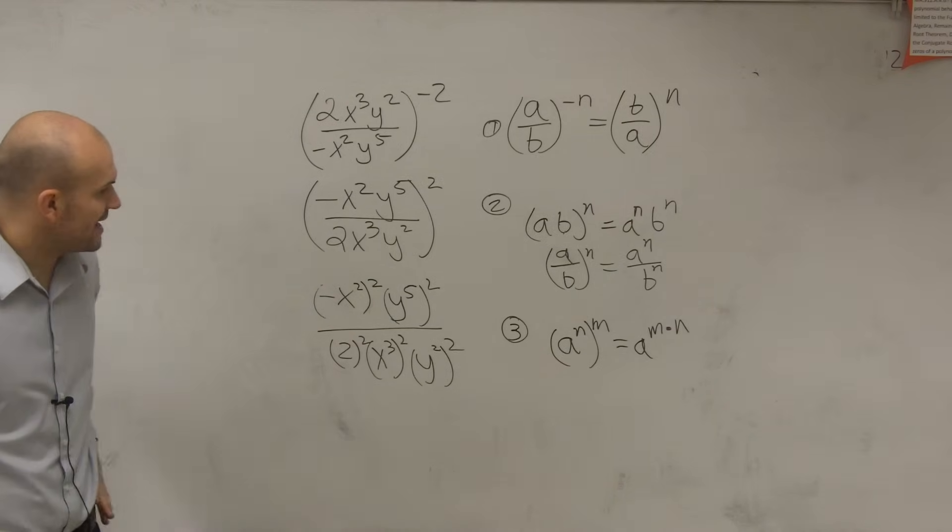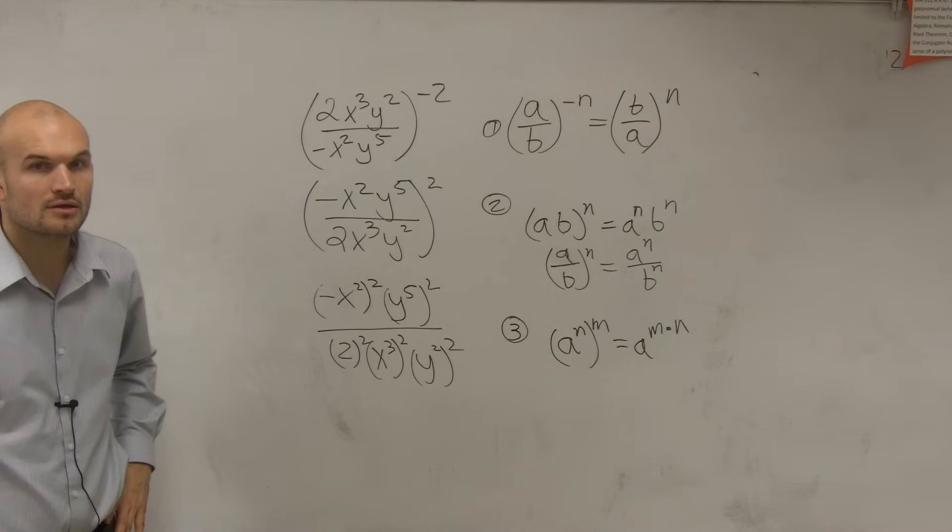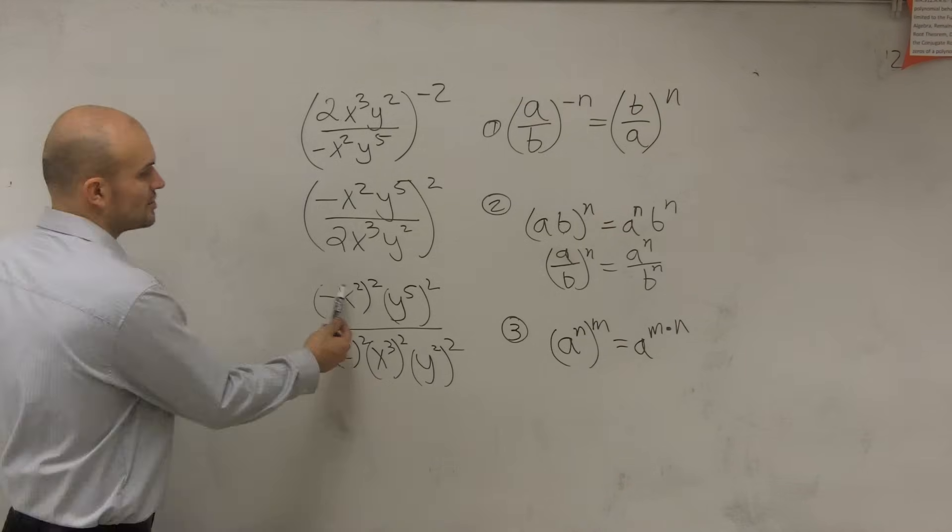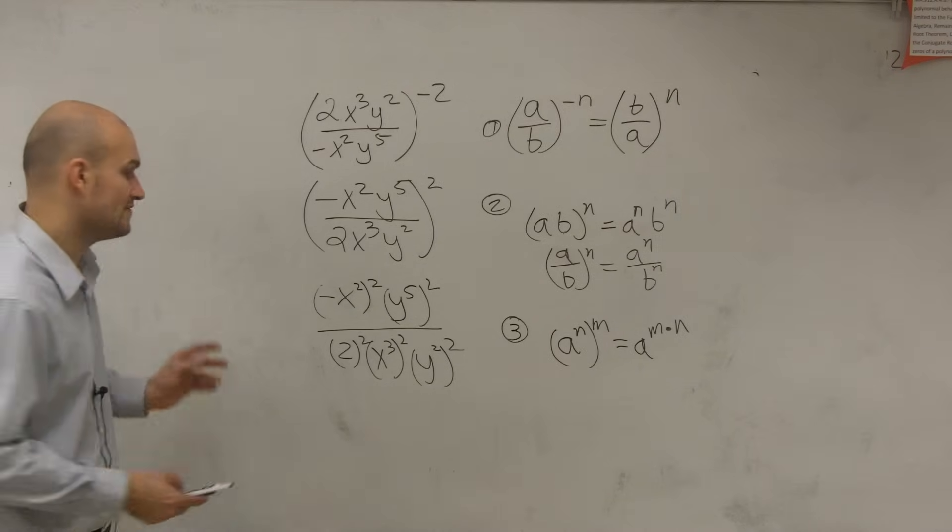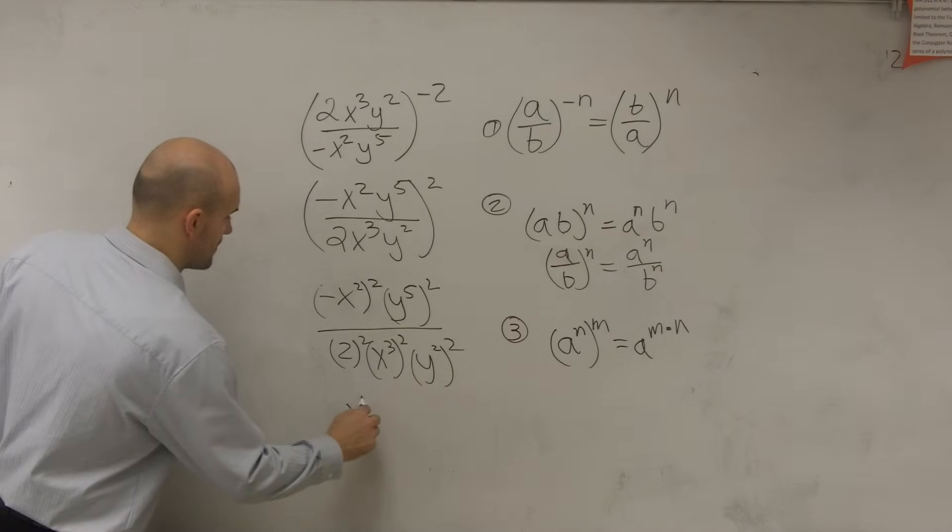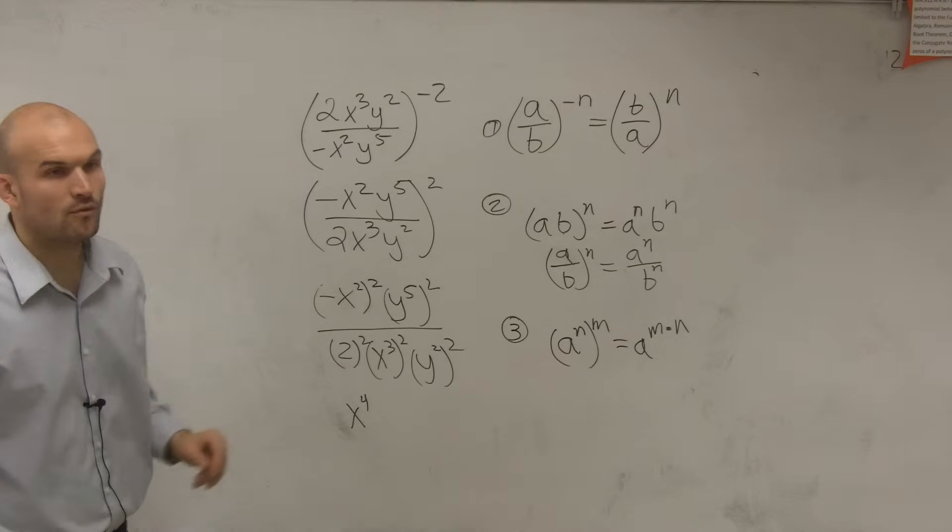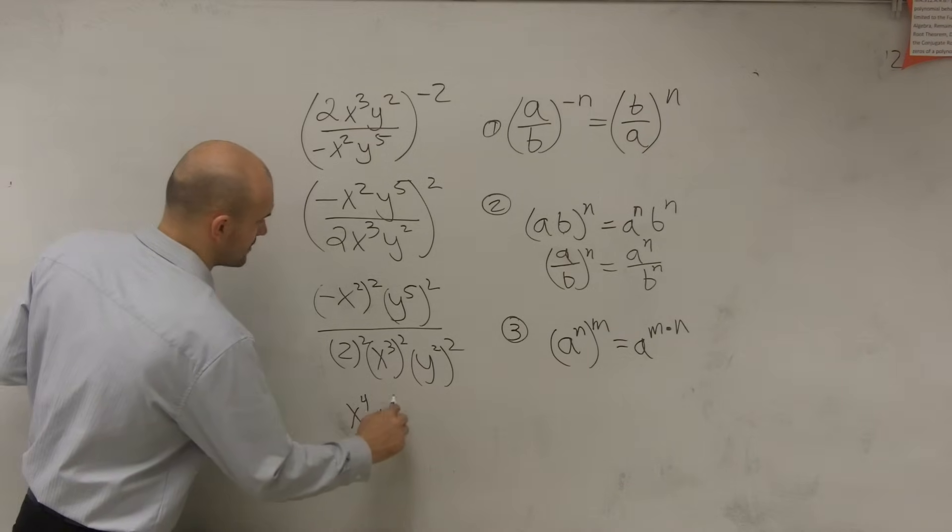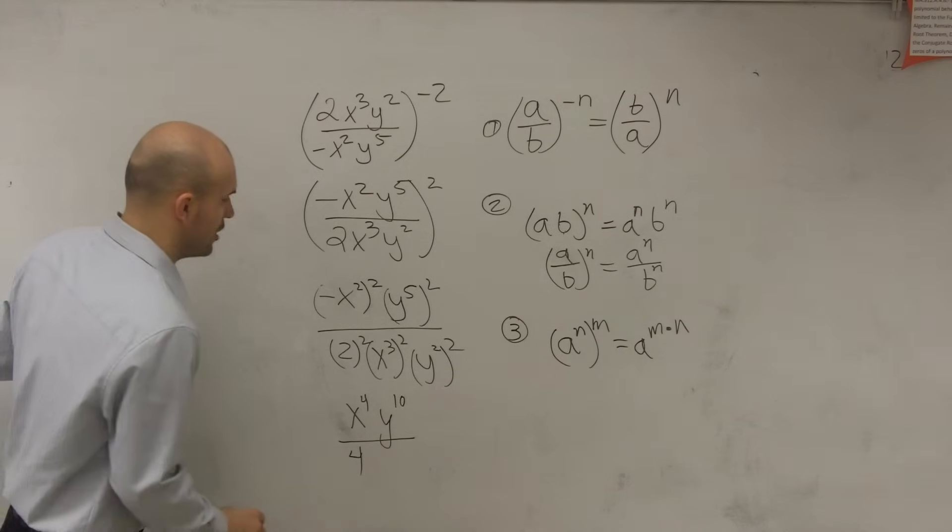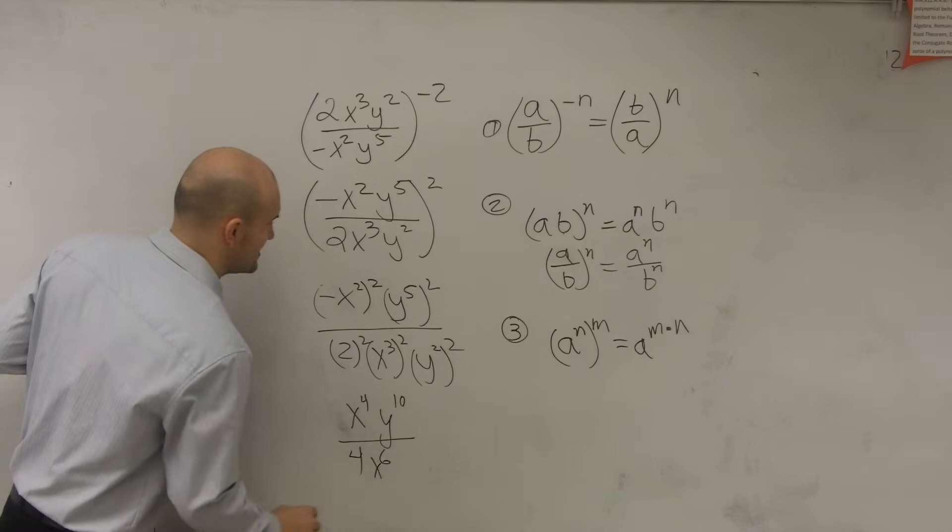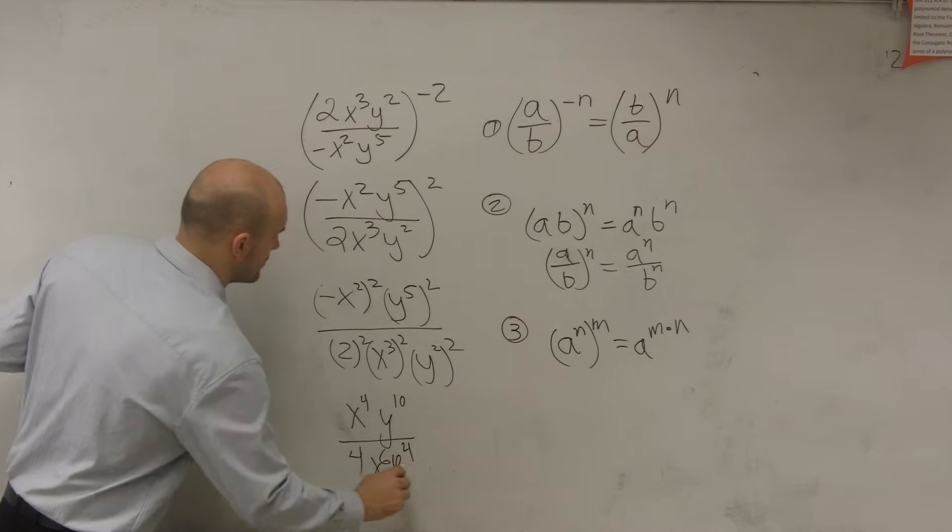So on my final step, I'll have negative x squared, squared, so negative x squared times negative x squared is now going to be a positive x to the fourth. Then I have y to the tenth divided by 4x to the sixth, y to the fourth.